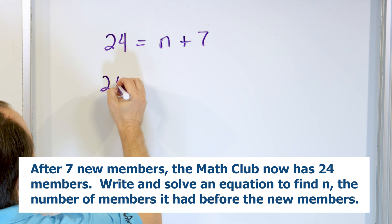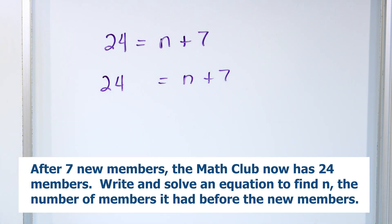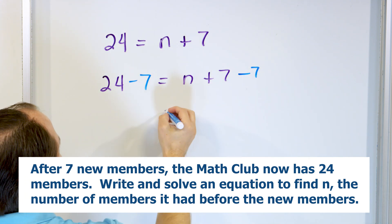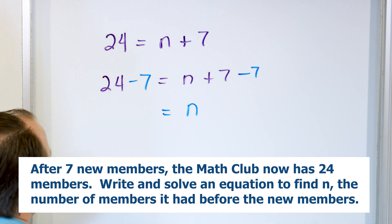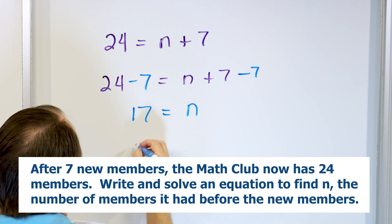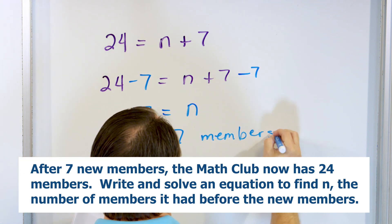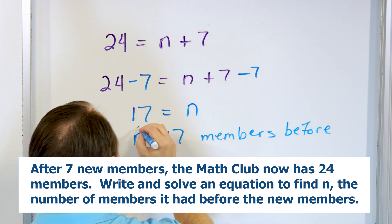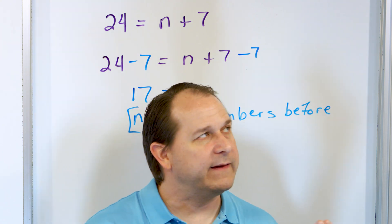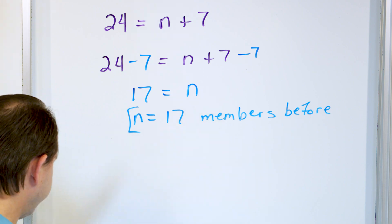So how do we solve this equation? We want to get the variable by itself. We are adding seven, so we subtract seven from both sides of the equation. On the right-hand side this goes to zero, leaving just N. What is 24 minus seven? 17. So N is equal to 17 members before. We had 17 members, then recruited seven more, for a total of 24. Checking: 17 plus seven equals 24. That is the right answer.